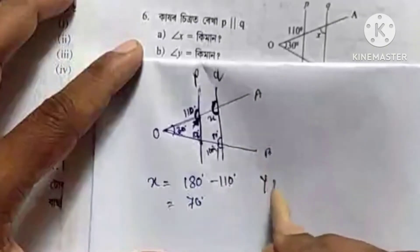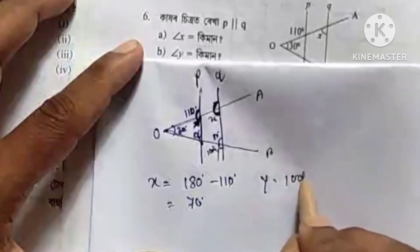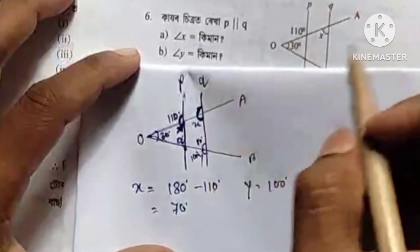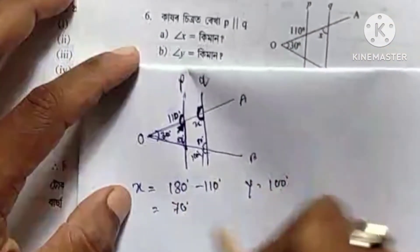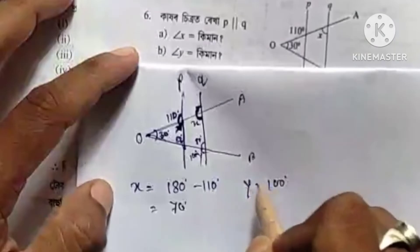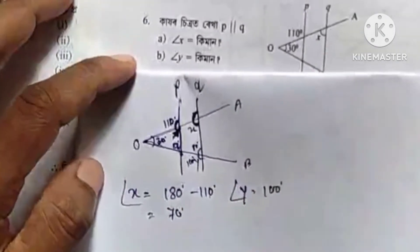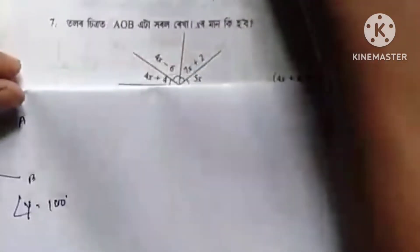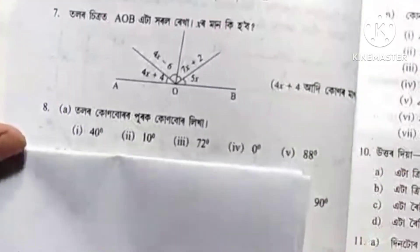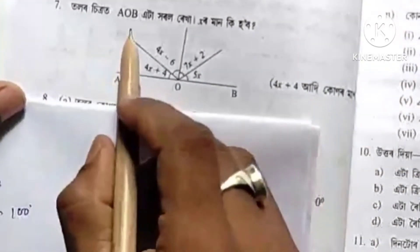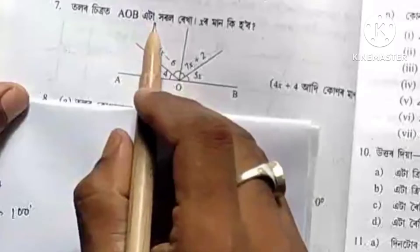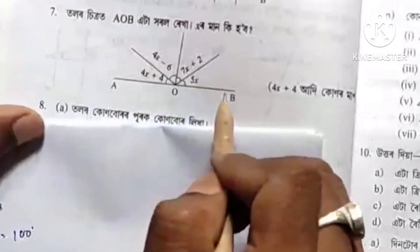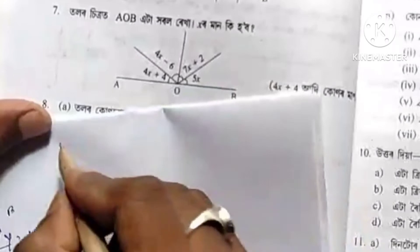y corner degree. Okay, this is how you can do it. x corner has 2 degrees and y corner degree. Here we go, heart number 2, the heart number 2.